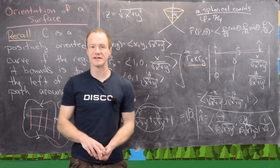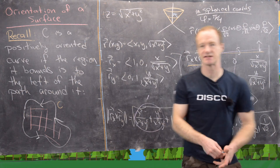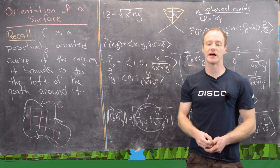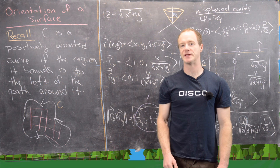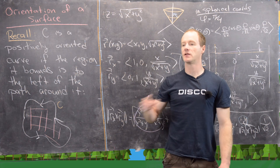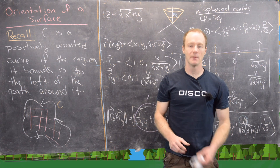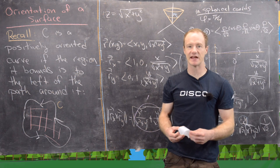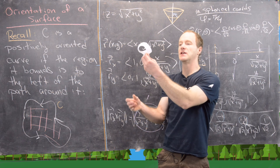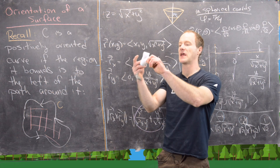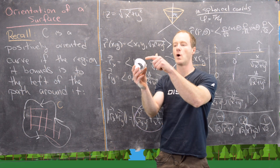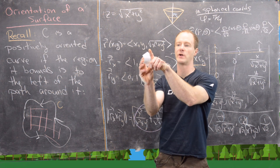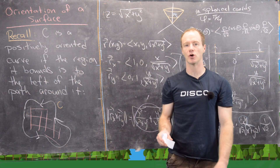You might ask: can you always find an orientation for a surface? In other words, is this unit normal vector always a well-defined thing? In fact, it's not. One good example is a Möbius strip. You can build one by taking a strip of paper, giving it a half-twist, and taping it to itself. If you think about a normal vector pointing out from this surface, as you go around one loop the normal vector will flip from pointing one way to the other, which means there's no good orientation for the Möbius strip.